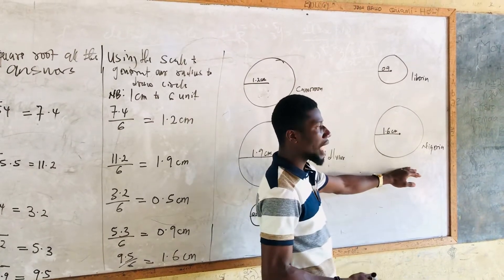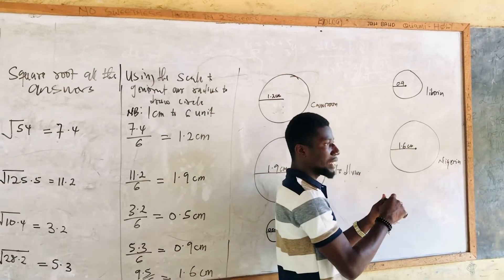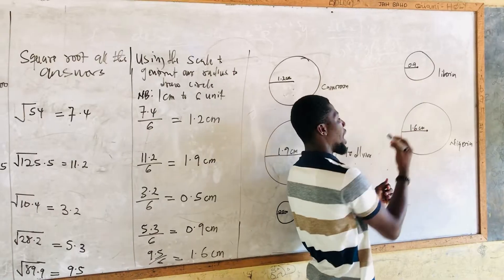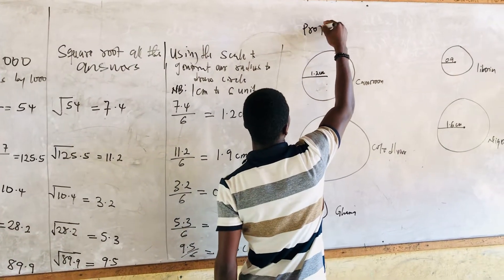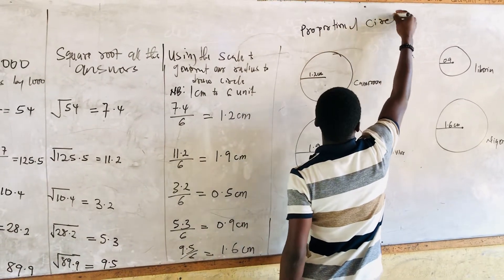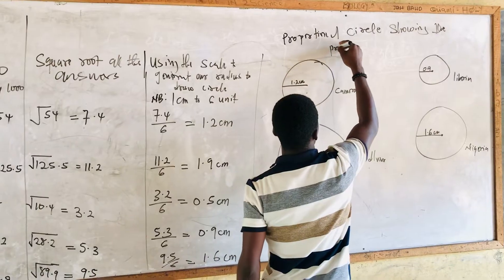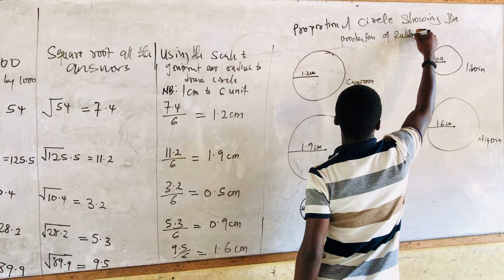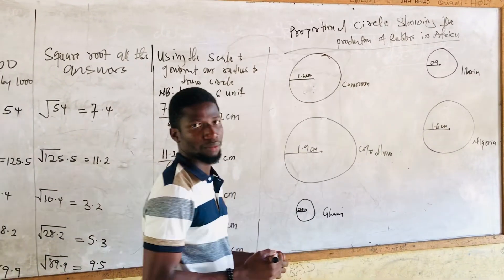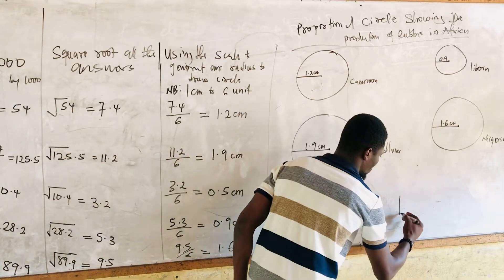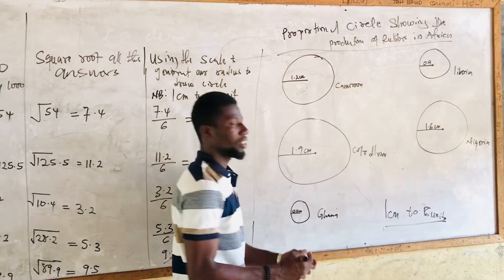Then we go to Nigeria. Per calculation, we have 1.6 centimeters. We open up our compass using our ruler to get our 1.6 centimeters, then we draw our circle. When you finish, we label it. When you finish, you can put your title there as a proportional circle showing the production of rubber in Africa. Then under it, you can indicate the scale that was given to you.